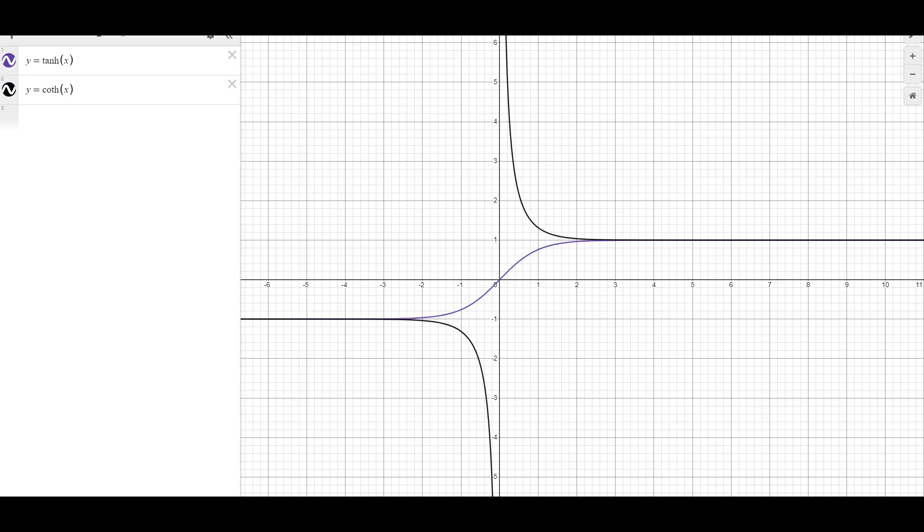Again I'll chuck it up on Desmos right now so you can see it. But you can see the purple one that's than and the black one is coth and it essentially just looks like that.